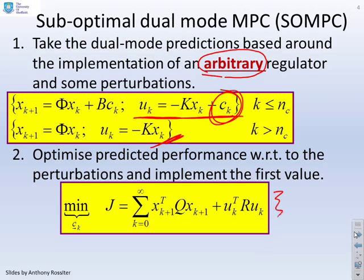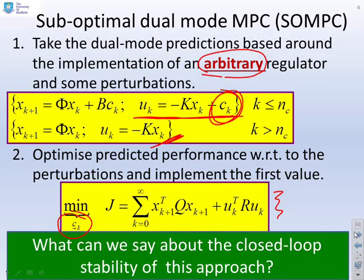So there's your typical performance index. And essentially you want to minimize that over c. And the question we want to ask ourselves is, will this lead to a stabilizing feedback control law? In other words, what can we say about the closed-loop stability of this approach?